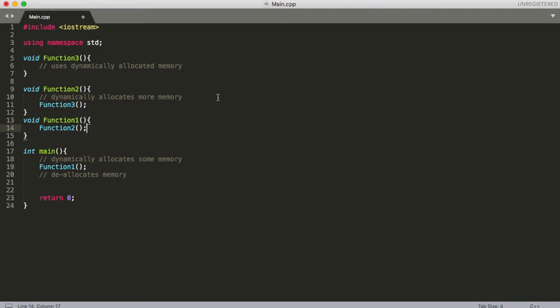We can see that in function 2, some more memory is dynamically allocated. Then function 3 is called, and we can see function 3 up here. It uses the dynamically allocated memory somehow, and then nothing else follows. So function 3 is then going to exit and pop off the stack.